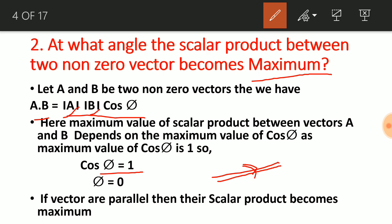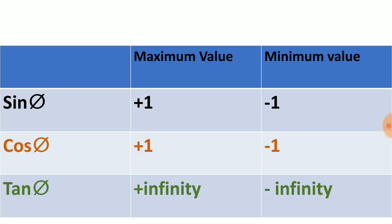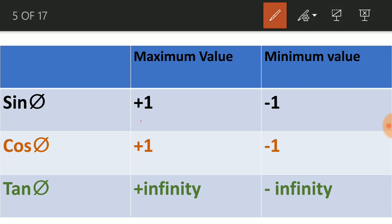In such a case, A·B becomes A times B — magnitude of A times magnitude of B — because cosφ becomes 1. For reference: the maximum value of sinφ and cosφ is +1, the minimum value is −1, the maximum value of tanφ is +∞, and the minimum value of tanφ is −∞.